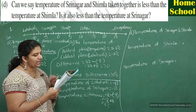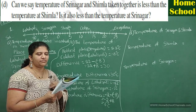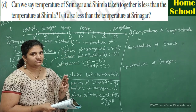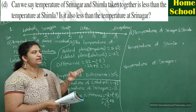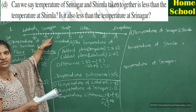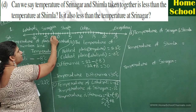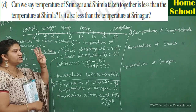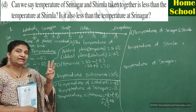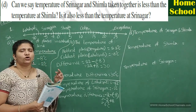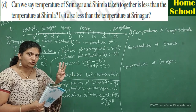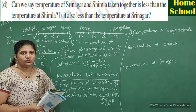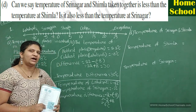Second sub-question: is the sum also less than the temperature at Srinagar? The sum is 3 degrees Celsius. Srinagar's temperature is minus 2 degrees Celsius. Is 3 less than minus 2? No — 3 is greater than minus 2. So the answer to the second sub-question is no.